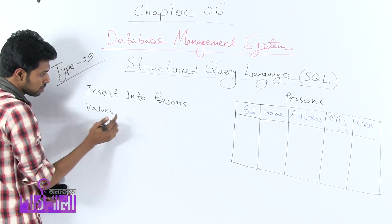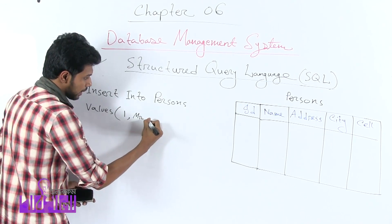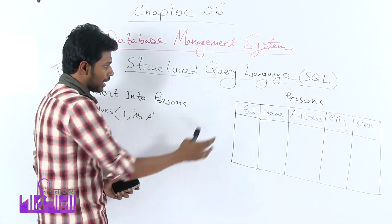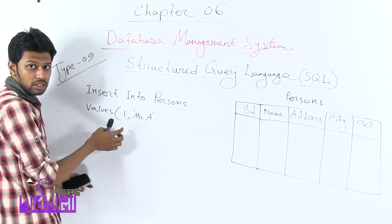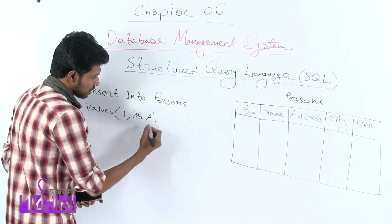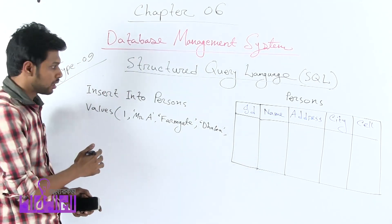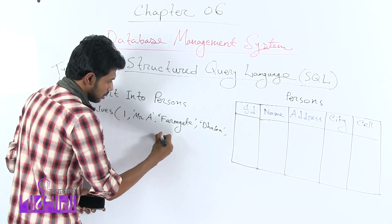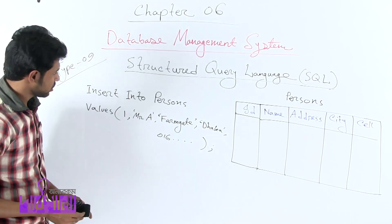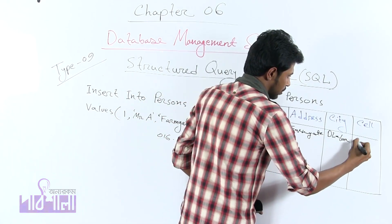INSERT INTO persons, VALUES — we provide the column values. The ID value is 1. The name is 'Mr. A'. Since name is a text/VARCHAR type, it goes inside single quotation marks. For integer type like ID, no quotation marks are needed. The address is 'Farmgate', city is 'Dhaka', and the cell number is 01016.